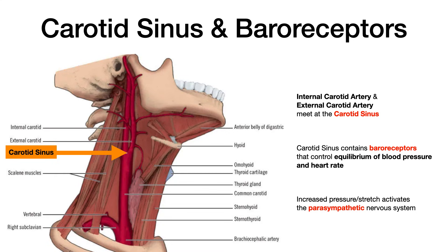This essentially functions as a feedback loop. Based on the literal stretch and pressure applied at the carotid sinus, there's a feedback mechanism that sends signals to the heart and controls cardiac output. So if there's too much stretch — meaning too much pressure — the idea would be to lower cardiac output by activating the parasympathetic nervous system.